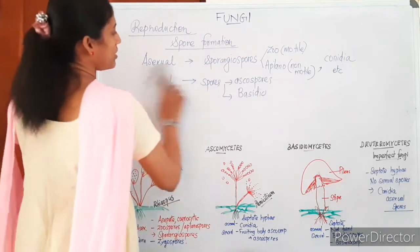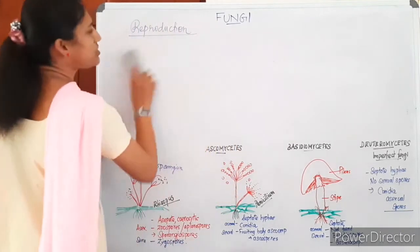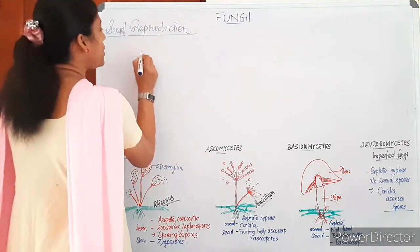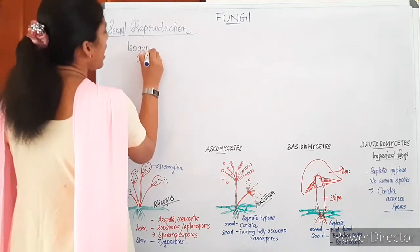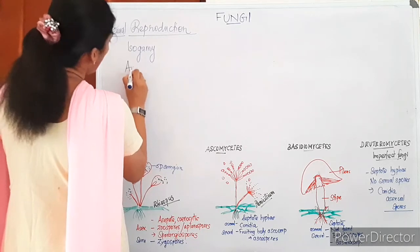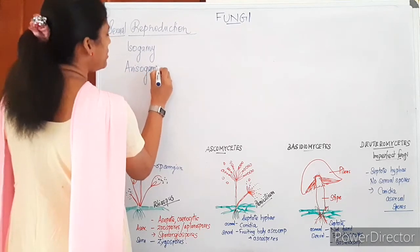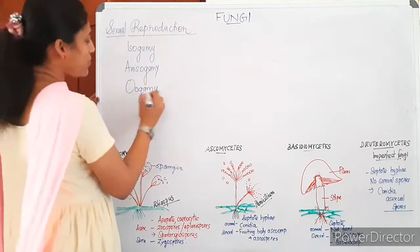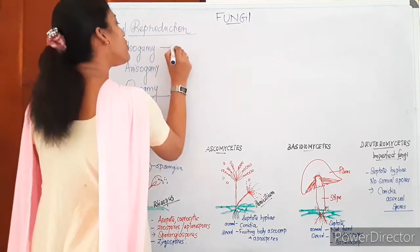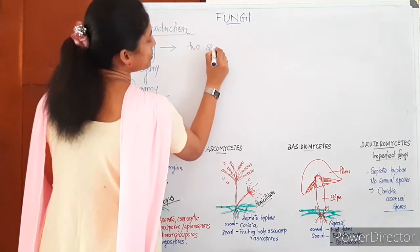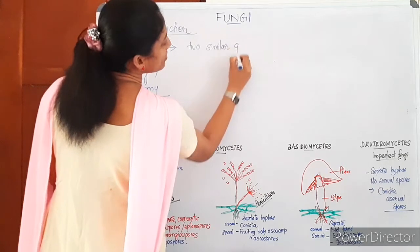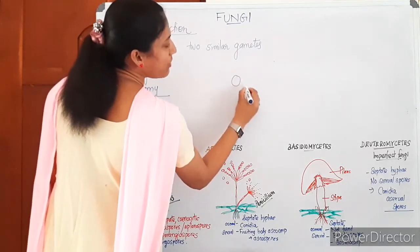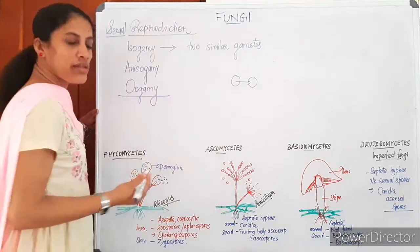If fungi undergo sexual reproduction, there are three main strategies: isogamy, anisogamy, and oogamy. In isogamy, two similar gametes fuse — both may be non-motile or both motile. The fusion of two similar gametes is called isogamy.